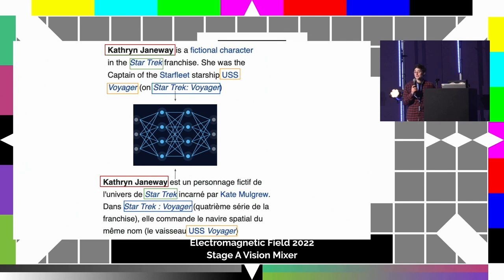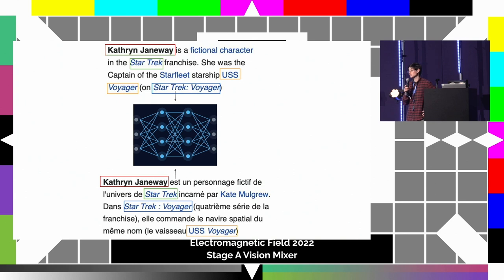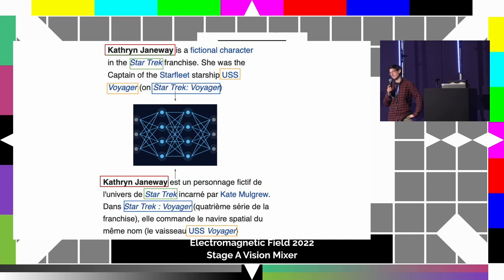Can anyone close to the screen see a potential problem with this example? You don't have to know French. Kate Mulgrew is in there and she shouldn't be. Kate Mulgrew is in the French sentence but she's not in the English sentence. This is a genuine real problem - not Kate Mulgrew. Well, maybe if you've seen Voyager. She's lovely.